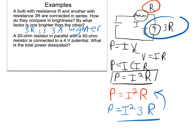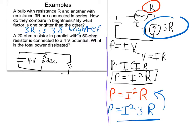Next up: a 20-ohm resistor in parallel with a 50-ohm resistor is connected to a 4-volt potential. What is the total power dissipated? I'm going to draw the circuit first — it's helpful to always draw these. We have a 4-volt battery, and then a 20-ohm resistor connected in parallel with a 50-ohm resistor. To find total power, both power equations require knowing the current, so we need to figure that out first.